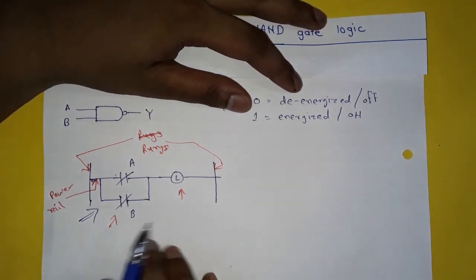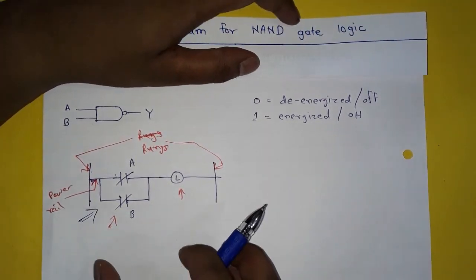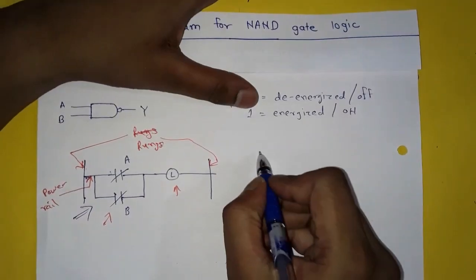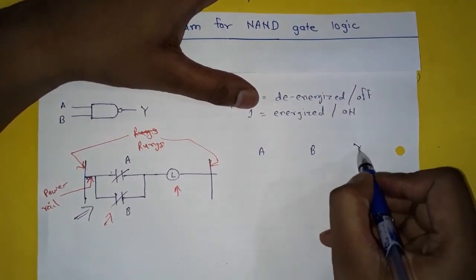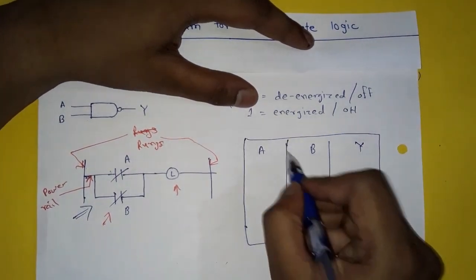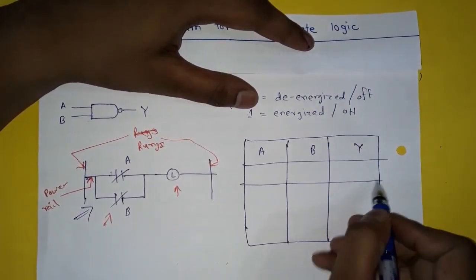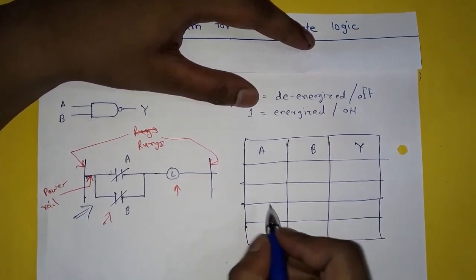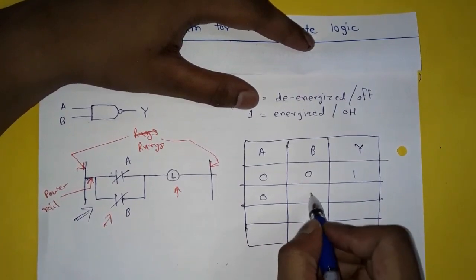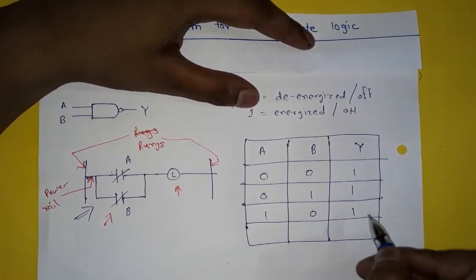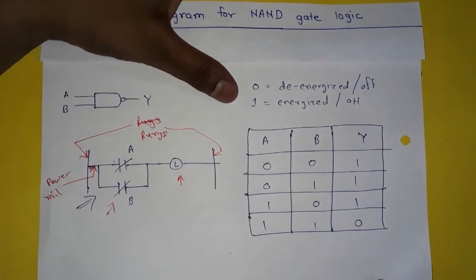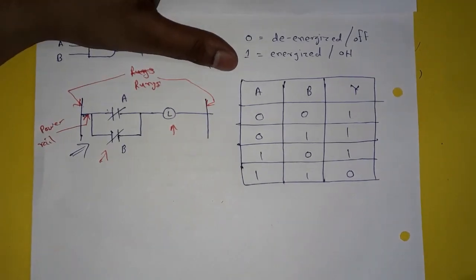To understand how NAND gate logic works in the ladder diagram, we will see the truth table. Here A, B, and Y is our output. The four conditions are: 0,0 → 1; 0,1 → 1; 1,0 → 1; 1,1 → 0.